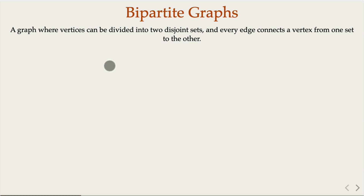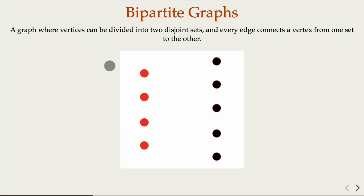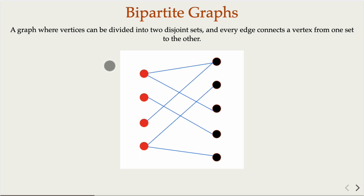Another important concept is bipartite graphs — a graph where vertices can be divided into two groups, with no edges within a group; edges only go between the two groups. For example, red and black vertices with four on the left and five on the right: connections are only allowed between left and right, not among reds or among blacks. That is a bipartite graph.